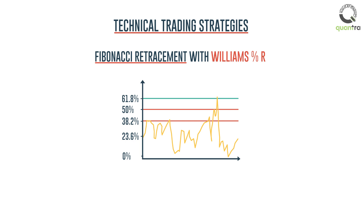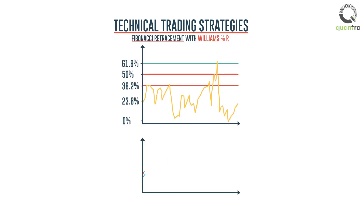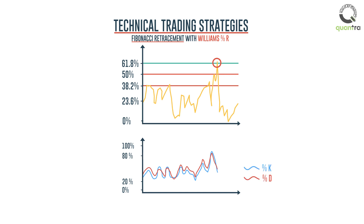We will understand this by introducing another indicator, the slow stochastic oscillator, which will help us confirm the price movements indicated by Fibonacci retracement. Note that as the price reaches the level of 61.8%, the %K and %D lines of slow stochastic have crossed the 80 line and begin to move below 80, indicating that the price trend is reversing. Hence, we say that the slow stochastic oscillator confirms the 61.8% line to be the resistance or the retracement level.